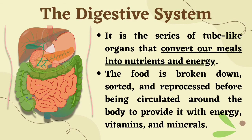What is the digestive system? We have different body systems — the nervous system, respiratory system, circulatory system, lymphatic system, etc. But each body system has different functions. For this lesson, we are going to focus on the digestive system. The digestive system is the series of tube-like organs that convert our meals into nutrients and energy. That is the main function — to convert the foods we eat into nutrients and energy to survive and perform our daily tasks.